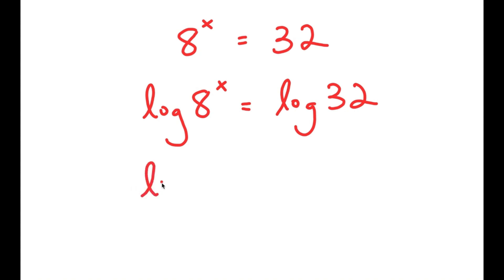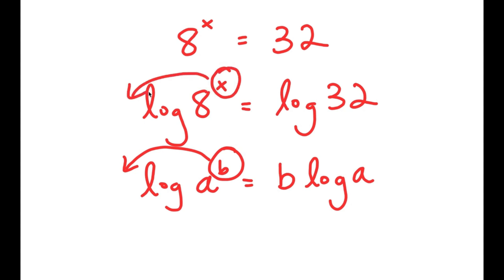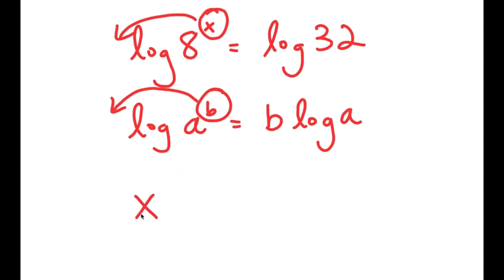Now, if I have something in the form log of a to the power of b, I can move b to the front of the logarithm. So log a to the power of b is equal to b times log a. In the case of log 8 to the power of x, we can think of x as b, so we move x to the front. I get x times log of 8 is equal to log of 32.